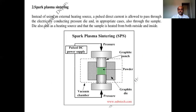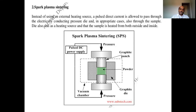The second advanced technique is spark plasma sintering. Instead of using an external heating source, a pulsed direct current is allowed to pass through the electrically conducting pressure die, and in appropriate cases also through the sample. The die also acts as a heating source and the sample is heated from both outside and inside. This is what we call the pressure die.